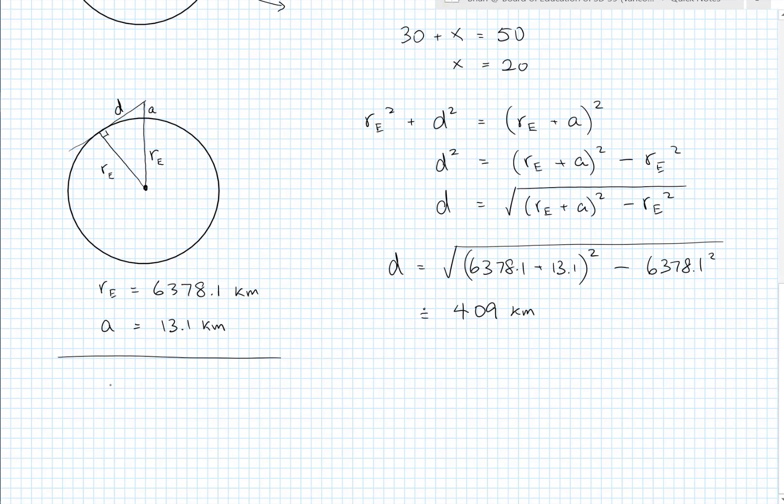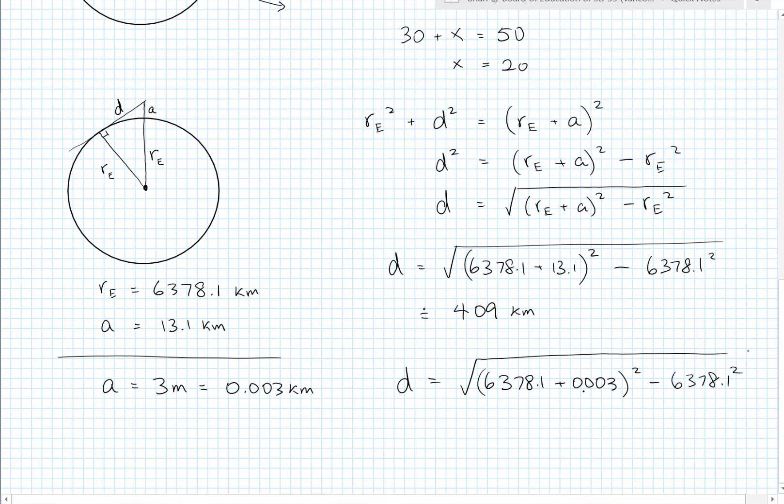This time the altitude is going to be a lot smaller, only 3 meters. We need the units to be the same though, so let's turn 3 meters into 0.003 kilometers. And now we can do the calculation again. We get D equal to 6,378.1 plus 0.003 squared minus 6,378.1 squared. And this might look like it's going to come out to 0 because those two numbers, when you're squaring them, are so close to one another. But it turns out you actually do get a meaningful result. And it turns out to be 6.2.